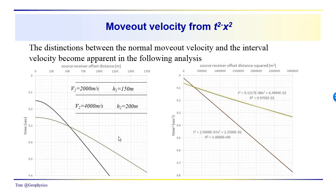We can see that very nicely over here — we have this simple model. If we transform this into t-squared x-squared coordinates, we get these two straight lines.